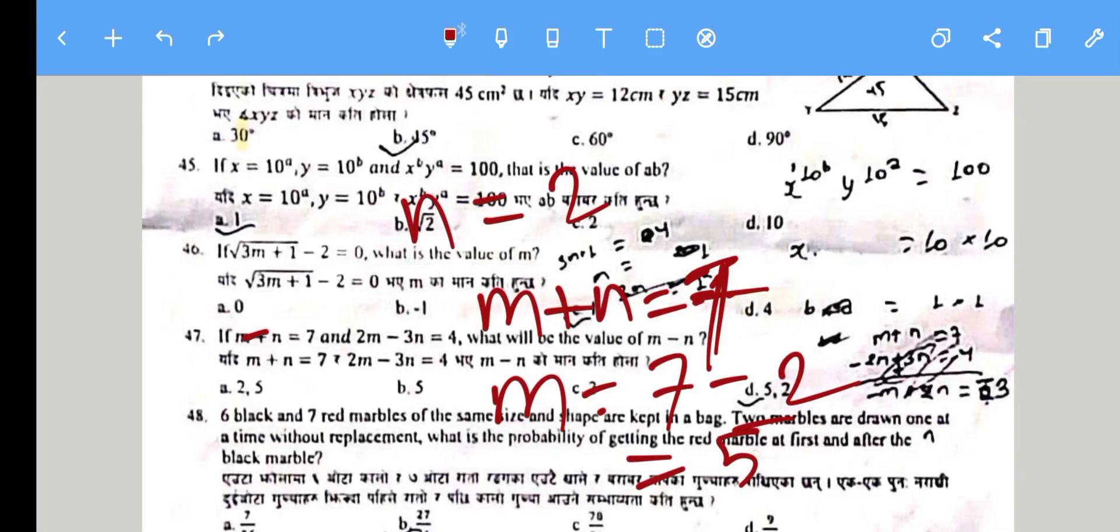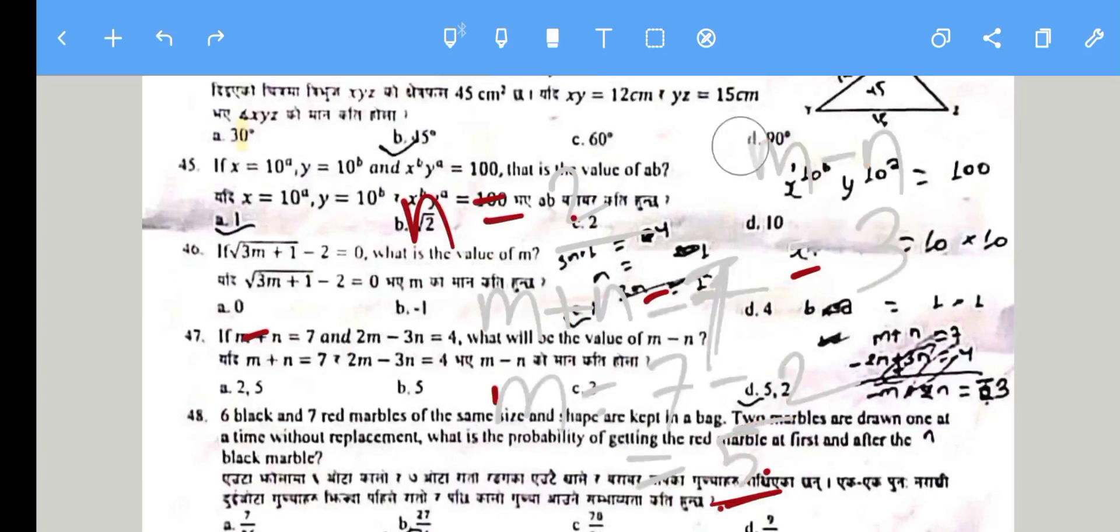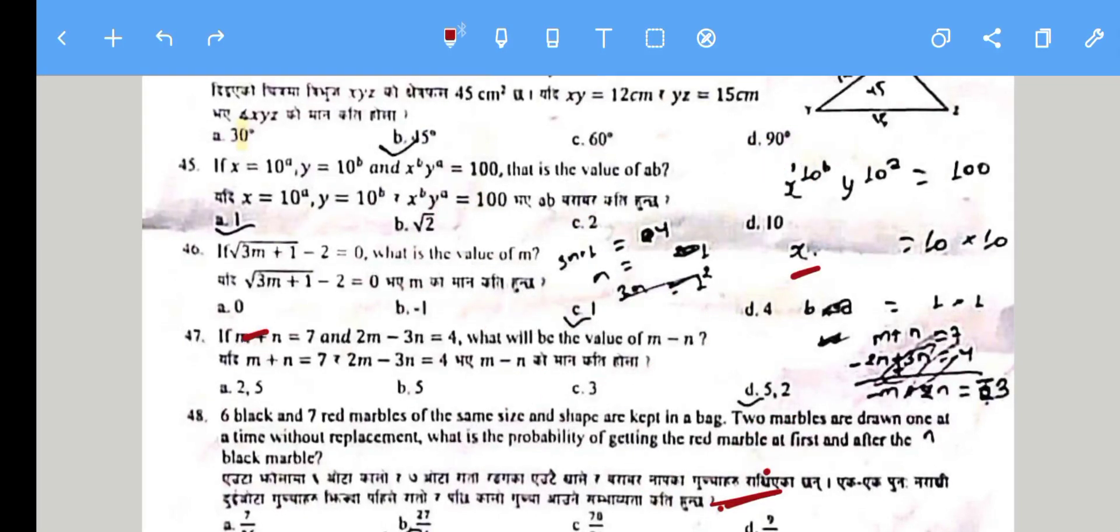So x = 5 and y = 2. We need x - y, which is 5 - 2 = 3. The correct answer is 3, option C.